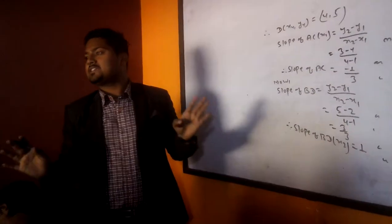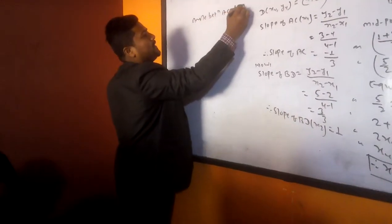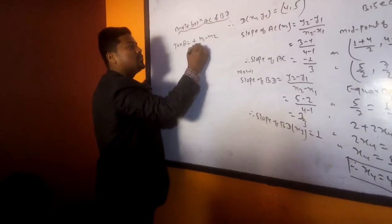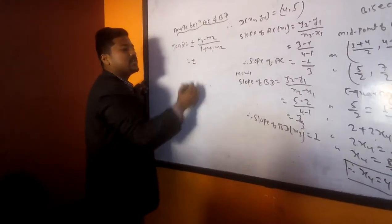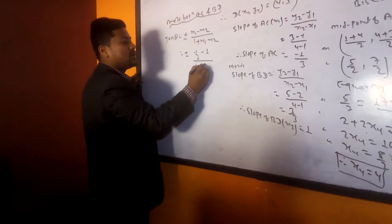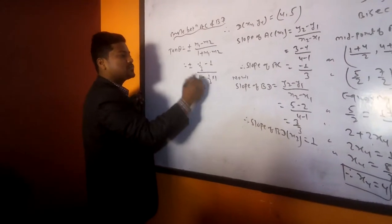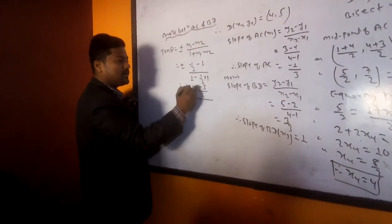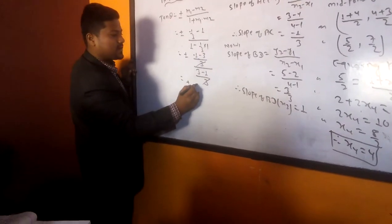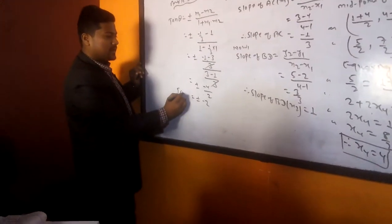Fine? So M1, M2, then angle between AC and BD we have to find. So what is the formula here? Tan theta equals plus minus M1 minus M2 upon 1 plus M1 into M2. Plus minus. What is the value of M1? Minus 1 by 3. M2 value 1. So tan theta equals plus minus, LCM take, minus 1 minus 3 upon 3 upon 3 minus 1 upon 3. These 3, 3 cancel. Plus minus, what remains here? Minus 1 minus 3 minus 4 upon what comes here? 2 comes here. So plus minus, minus 2 comes here.